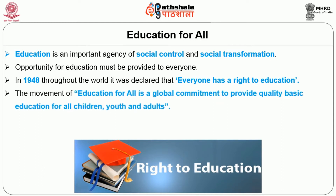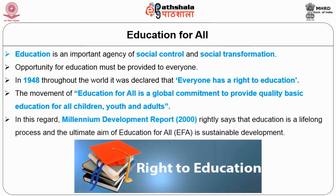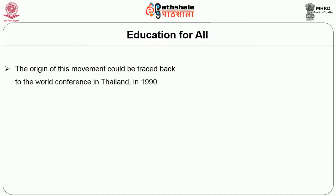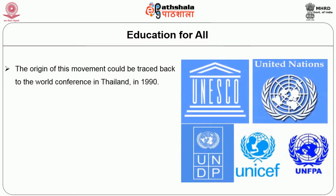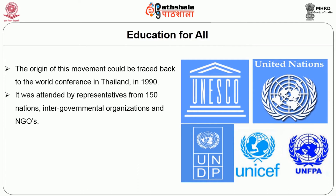The movement of Education for All is a global commitment to provide quality basic education for all children, youth and adults. The Millennium Development Report rightly says that education is a lifelong process and the ultimate aim of Education for All is sustainable development. The origin of this movement could be traced back to the World Conference in Thailand in 1990, organized by UNESCO, UNDP and UNICEF — special wings of the United Nations. This conference was attended by representatives from 150 nations.